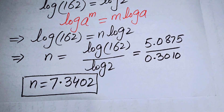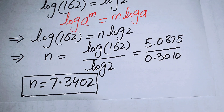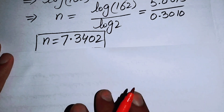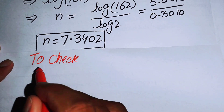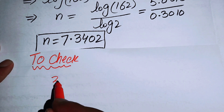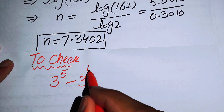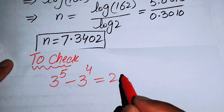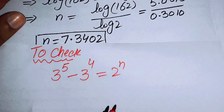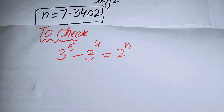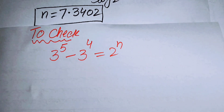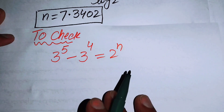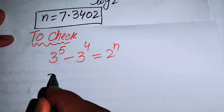This is the value of n. Now we will check whether this value satisfies the original equation. We rewrite the given question: 3 to the power of 5 minus 3 to the power of 4 equals 2 to the power of n, and substitute n equals 7.3402 on the right hand side.